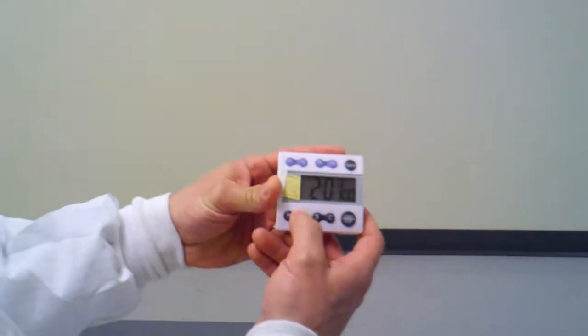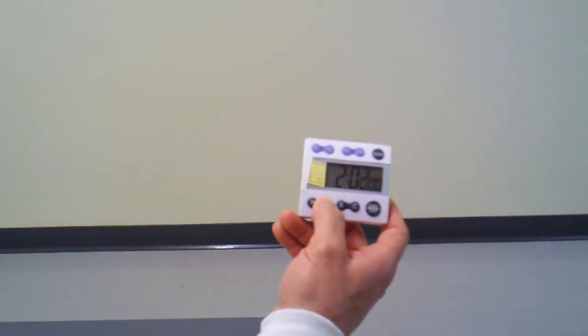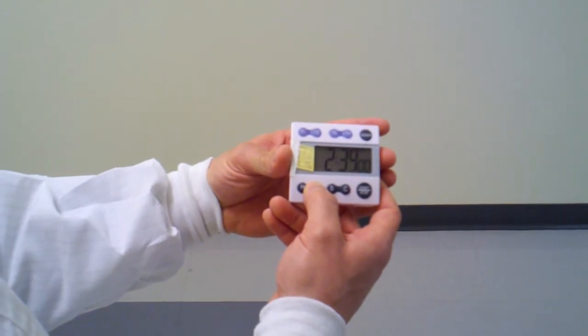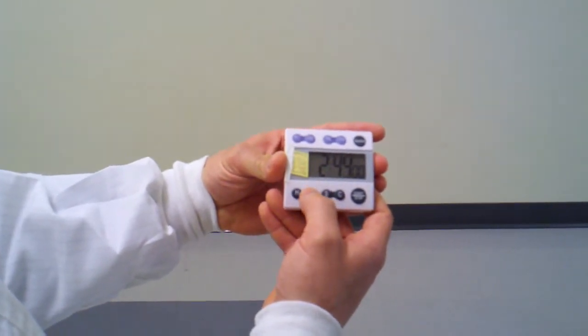And we're going to set our timer for 2.75 hours. So let's do that right out here. So we're going to go hour, hour, hold down the minute until it gets to 45. And when that rings, we're going to come back and induce ourselves for the rest of the electroporation.